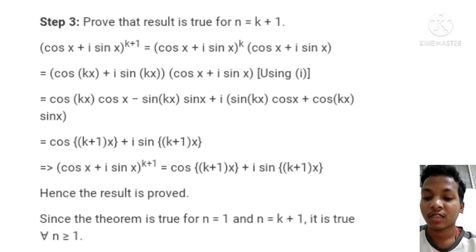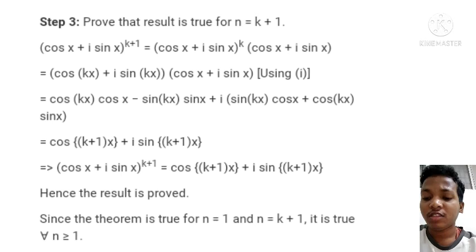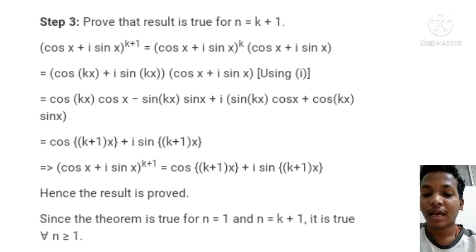Now, using equation 1 — that is, cos x plus i sine x to the power n equals cos(nx) plus i sine(nx) — and writing n equals k, we get: cos(kx) multiplied by cos x minus sine(kx) multiplied by sine x, plus i times sine(kx) cos x plus cos(kx) sine x. This becomes cos(k+1)x plus i sine(k+1)x.